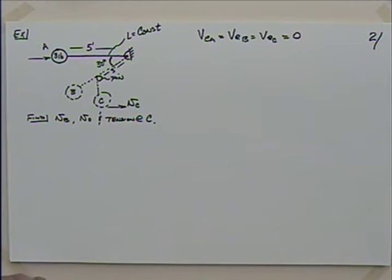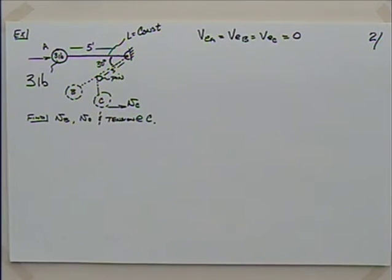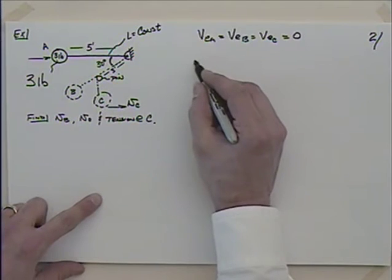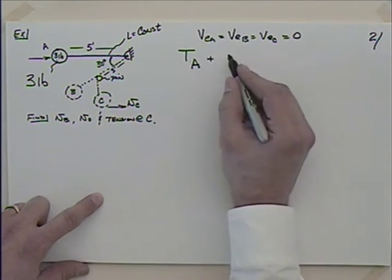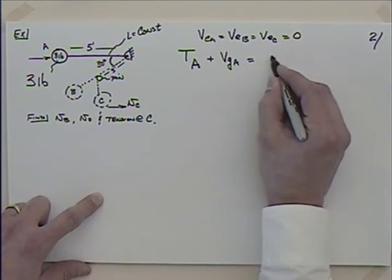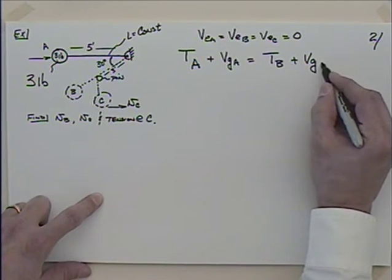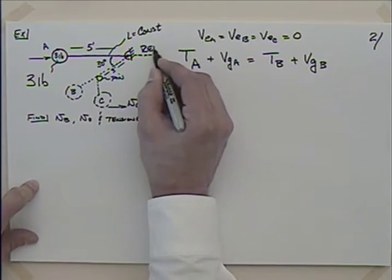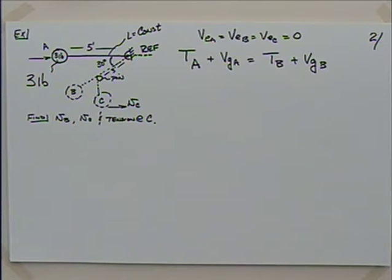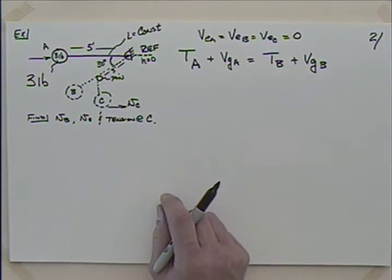That's a three-pound ball. So I can say that kinetic energy at A plus potential energy VGA is going to equal kinetic energy at B plus potential energy at B. I'll take the reference up here at the initial position, so H equals zero there. Even though everything below will have negative heights, that's fine.